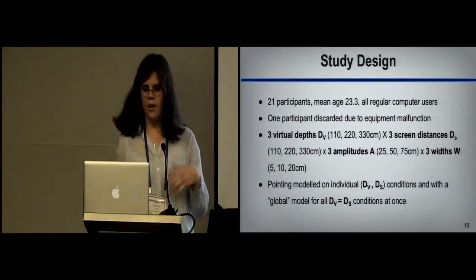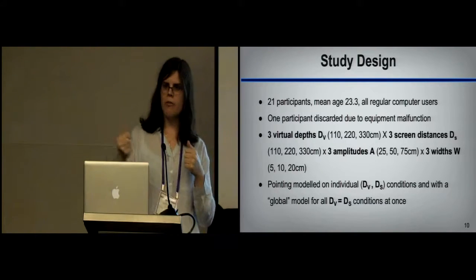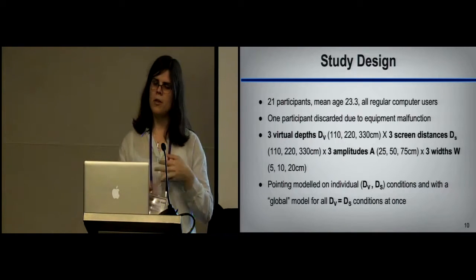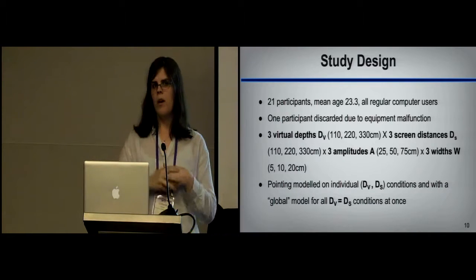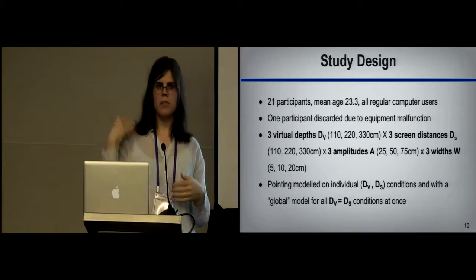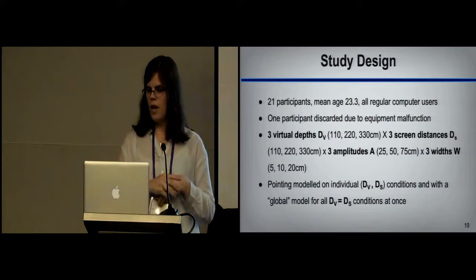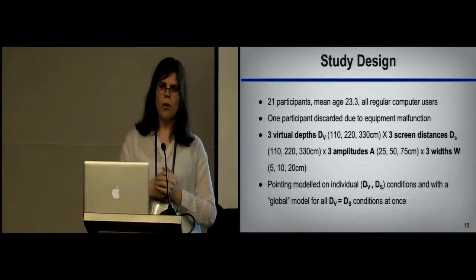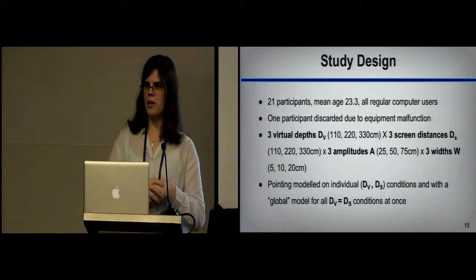So the study design that we used is sort of a little bit interesting. We stood people at different physical distances from the screen. So you were standing at 110, 220, or 330 centimeters. And then we modeled pointing with three amplitudes and three widths. Then we would use VR to try and simulate the other conditions. So we would have VR to try and simulate 220 centimeters away when you were actually standing 110. And we wanted to compare and see if these are the same. Also, we were doing a model of pointing that was trying to capture multiple depths at once, which is the global model and the best case for angular metrics.